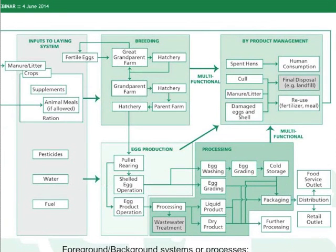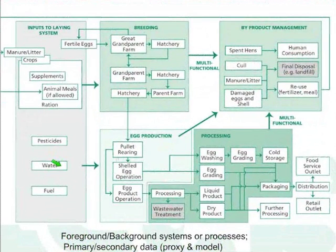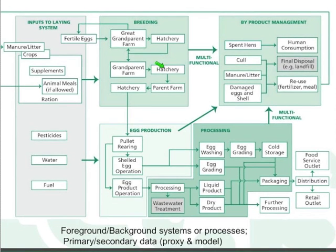The system boundary diagram shown here highlights the background and foreground processes. So inputs would be considered primarily background information. If the system under study is egg production at the farm gate, then the breeding could be considered a background production process and primary data wouldn't be needed. Whereas if the processor gate is considered to be the system boundary, then the egg production and processing would be considered foreground processes. Byproduct management, of course, is relevant for all systems.